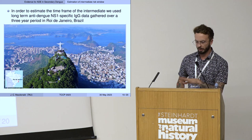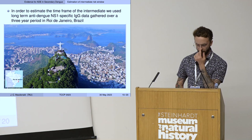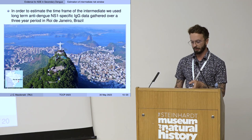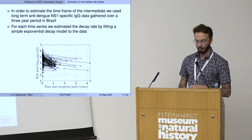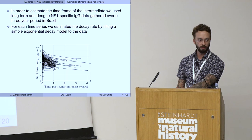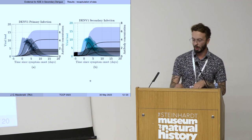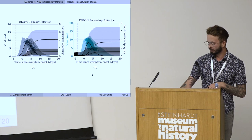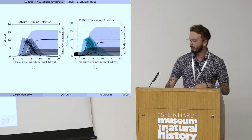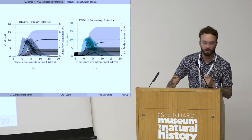We also estimate the time frame of this intermediate risk window. To do that, we use NS1-specific IgG data gathered over a three-year period in Brazil, with some caveats I'll discuss. For each long-term immune decay time series, we estimate a distribution of decay rates by looking at the decay rates of each individual time series and then do further work. This example shows model time simulations against actual time series data, with allowed variation in antibody levels in secondary cases and variation in infection start time.